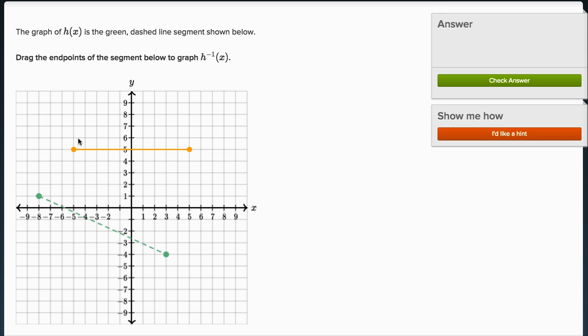And it's an interactive one where we can move this line around, and they tell us the graph of h(x) is in green, so that's this dotted green line right over here. The graph of h(x) is the green dashed line segment shown below, so that's this. Drag the endpoints of the segment below to graph h inverse of x.